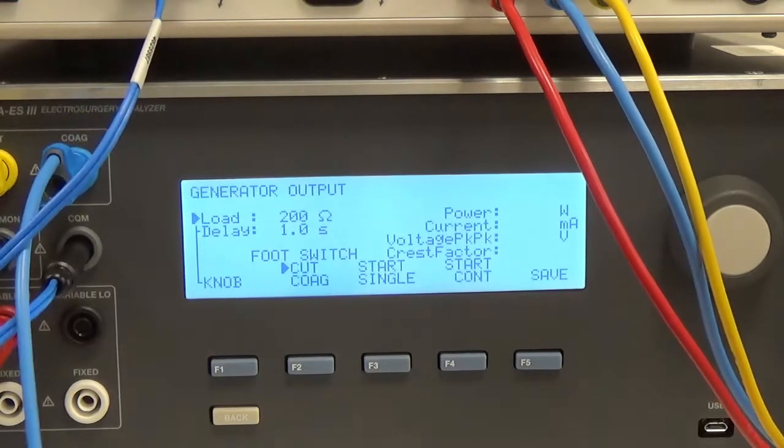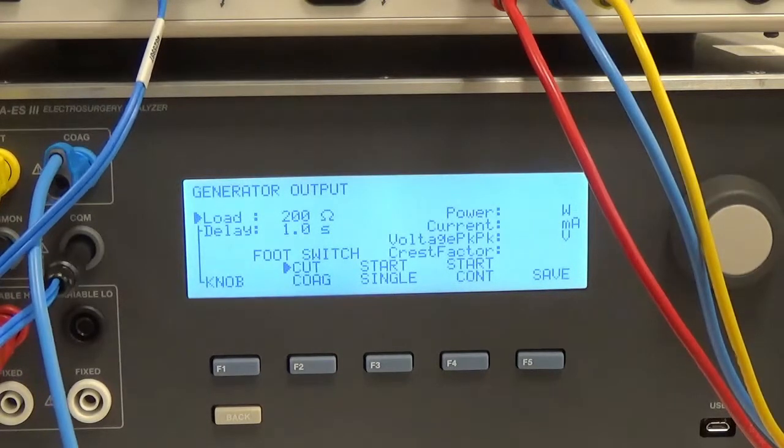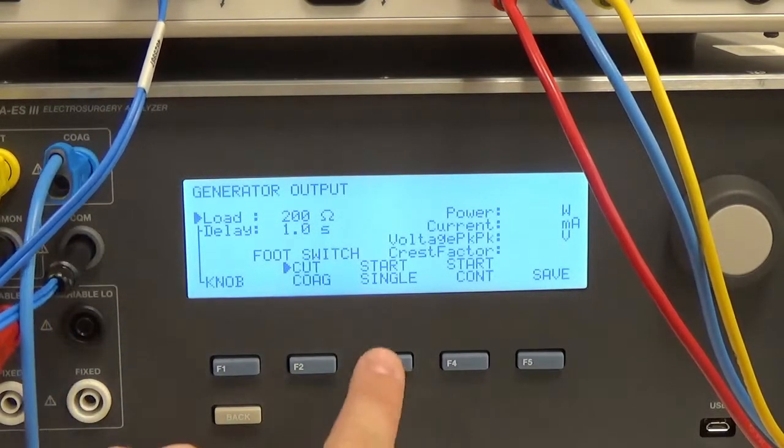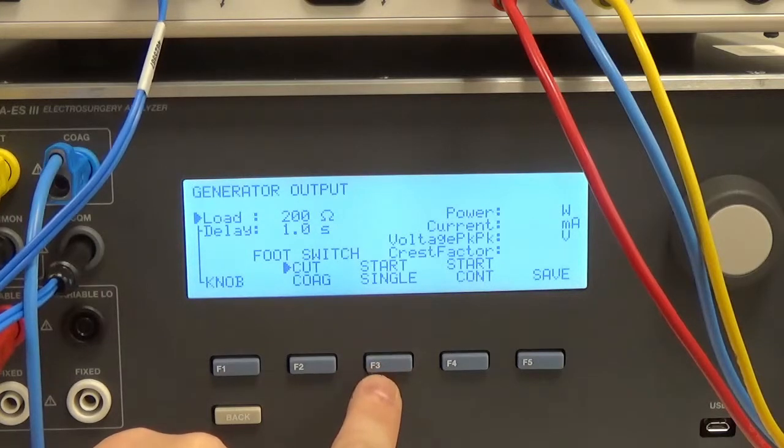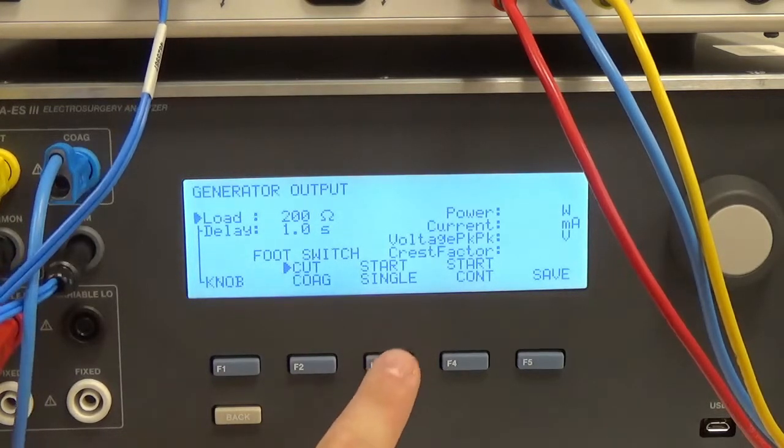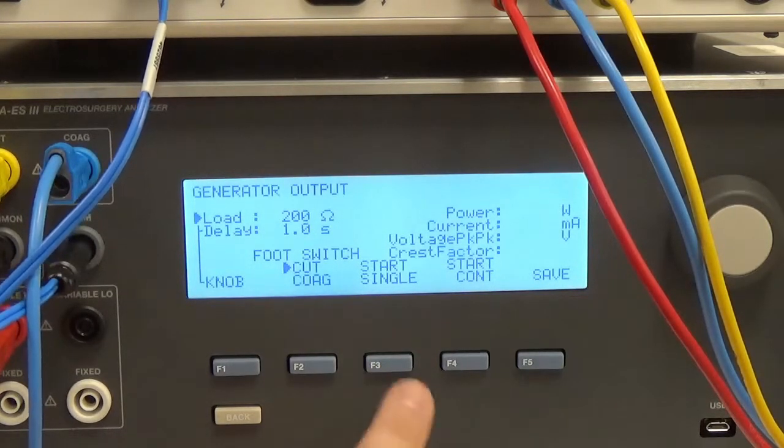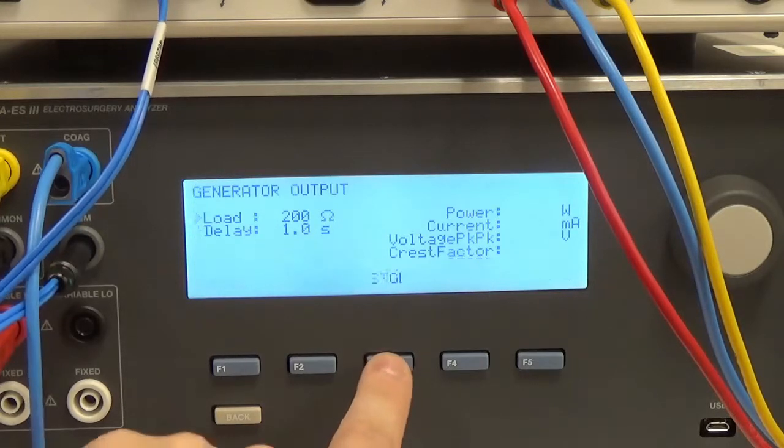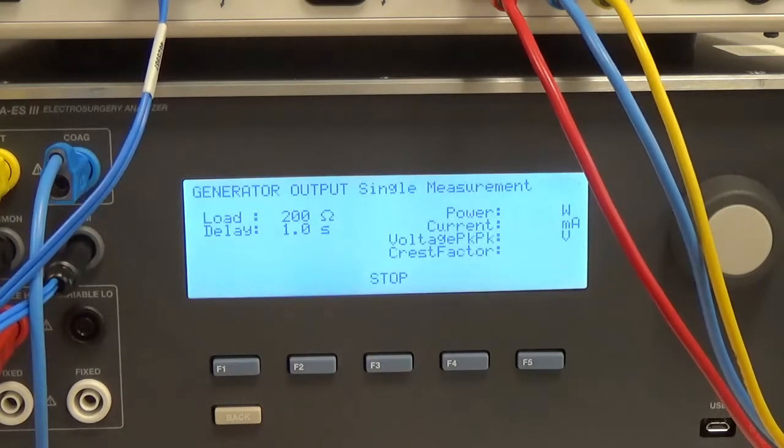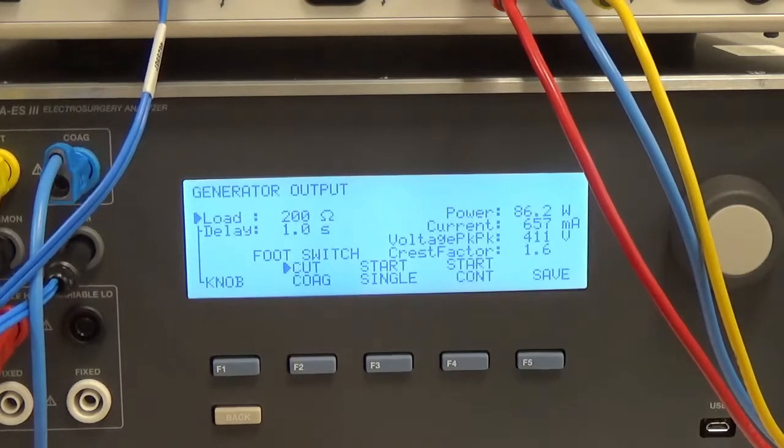So with everything set to go, all I need to do is hit start single. We are set for cut. Before I start, know that my ESU is actually set to 100 on the cut side. So let's see what wattage we get with 200 ohms. 86.2 watts.